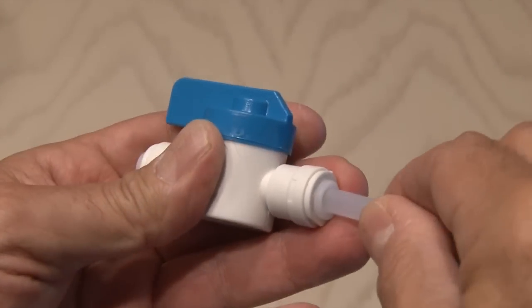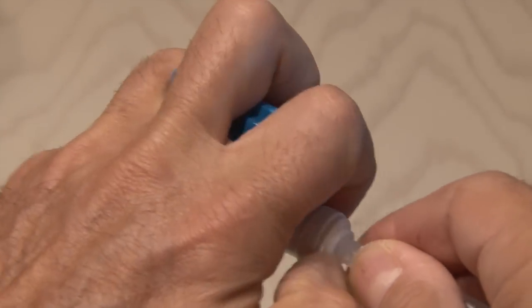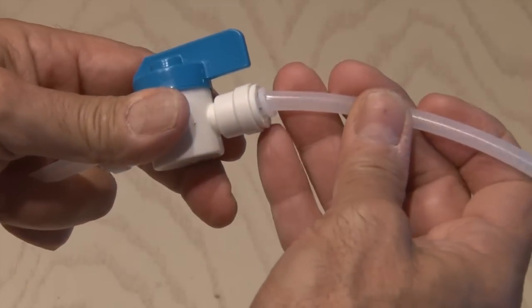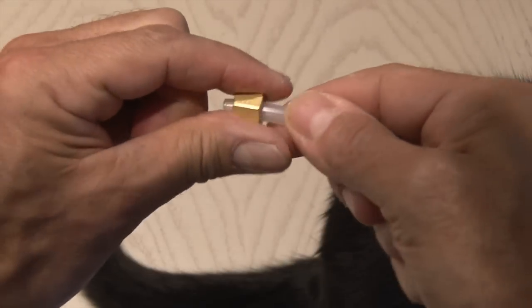A quarter inch on-off valve is not essential for this project, it just makes it easier to use. You'll attach one piece of hose to one end of the valve, and then cut off about a six inch piece and attach it to the other end.